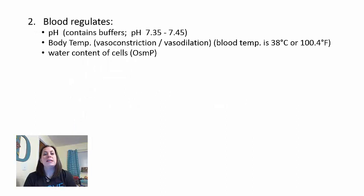The second function of blood is that it regulates things. It regulates the pH of your body by containing buffers that keep blood pH between 7.35 and 7.45—slightly basic, since 7 is neutral. It also regulates body temperature through vasoconstriction, pulling blood away from the surface, or vasodilation, shunting blood toward the skin to release heat.